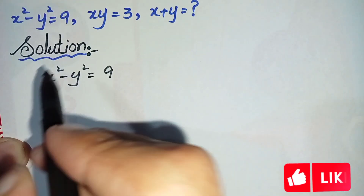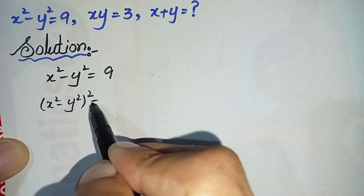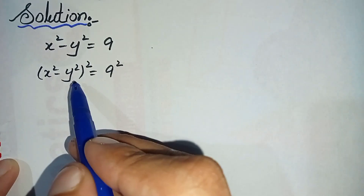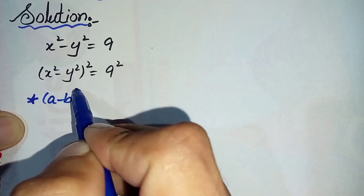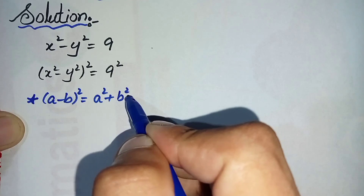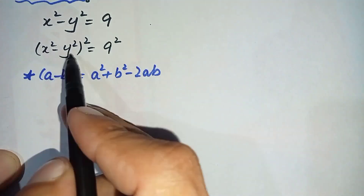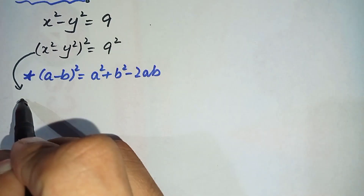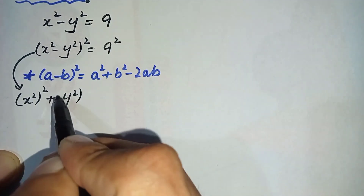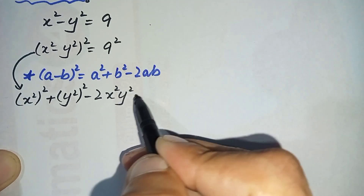First of all we will take square on both sides: x squared minus y squared, whole square, is equal to 9 squared. Next we will use the famous algebraic identity, that is (a minus b) whole square is equal to a squared plus b squared minus 2ab. By using this algebraic formula we can write this equation as: x squared whole square plus y squared whole square minus 2 times x squared y squared is equal to...